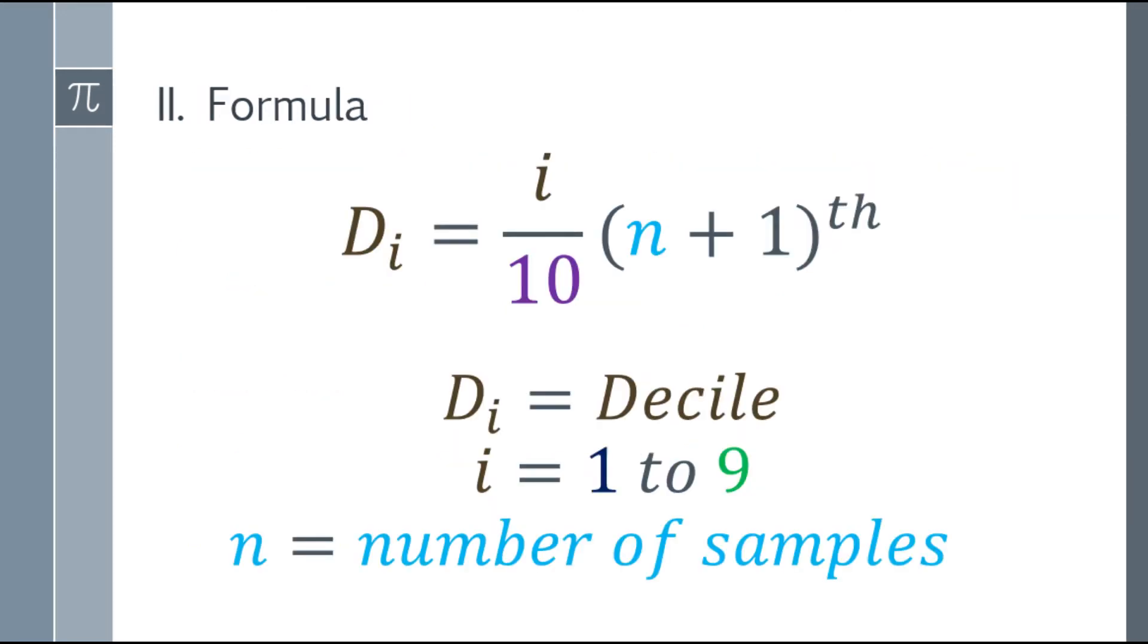So let's move on to the formula. The formula we'll use is: D sub i equals i over 10, multiplied by the quantity n plus 1, to the th. Remember, the th here is the ordinal number, and it's not a variable. So Di will be the deciles, and i will be 1 to 9. And n will be the number of samples.